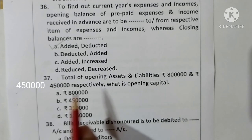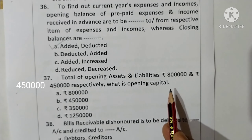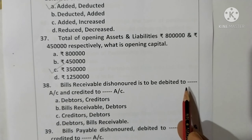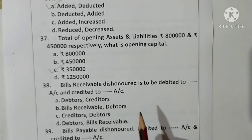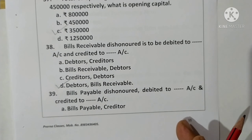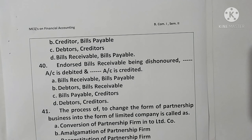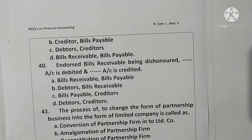Question 38: Bills receivable dishonored — the debtors account is to be debited and the bills receivable account is to be credited. Option D is correct. Question 39: Bills payable dishonored — the bills payable account is debited and the creditors account is credited. Option A is correct.